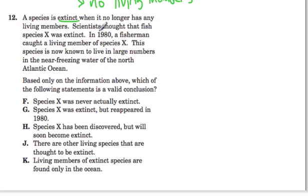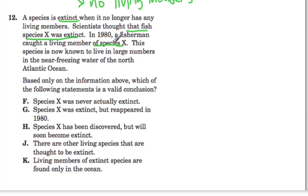As we look through this problem, it talks about scientists who thought that fish species X was extinct. In 1980, a fisherman caught a living member of species X. This species is now known to live in large numbers in the near-freezing water of the North Atlantic Ocean. So they thought this fish, species X, was extinct. But in 1980, a fisherman caught a living member of the species, which means it definitely was not extinct.